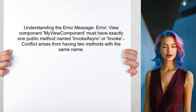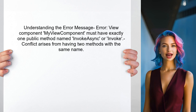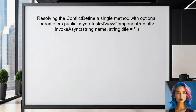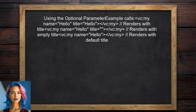To address the user's issue with view components, we first need to understand the error message. The user is encountering a conflict because there are two methods named InvokeAsync with different parameters. To resolve this, the user can define a single method with optional parameters. This allows for flexibility without causing method name conflicts. With this setup, the user can call the view component with or without the title parameter. If the title is not provided, it defaults to an empty string.